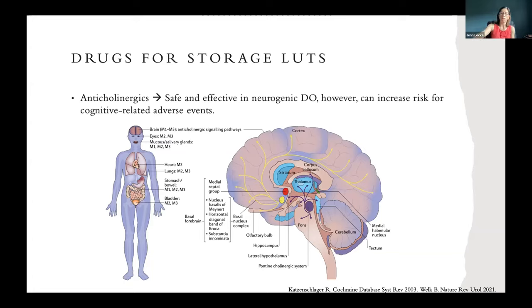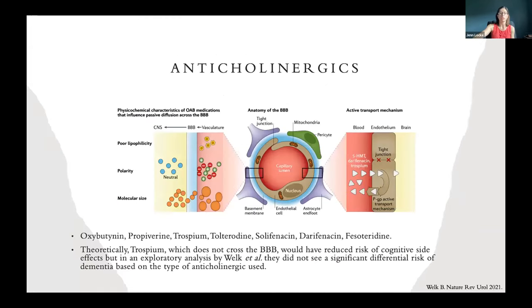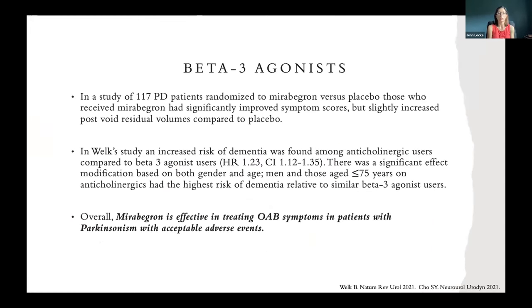The most commonly used anticholinergics are tolterodine, oxybutynin, and solifenacin. Theoretically, trospium is important because it doesn't cross the blood-brain barrier, giving it a reduced risk of cognitive impairment. However, in an exploratory analysis by Welk, there was no significant difference in the risk of dementia based on the type of anticholinergic used. In my patient population, I usually start with beta-3 agonists, purely because of the side effect profile and the possible cognitive impairment with anticholinergics.